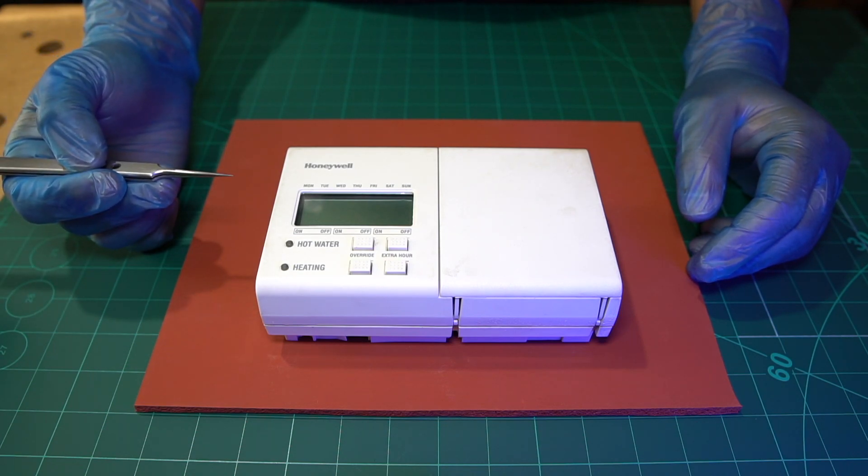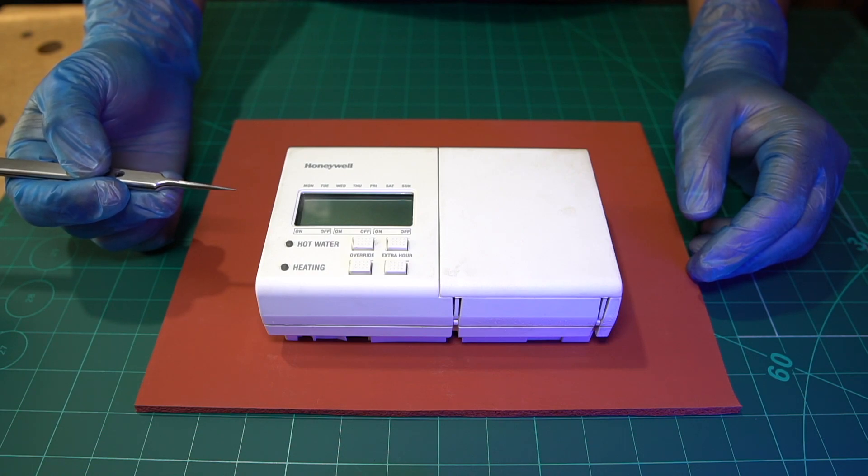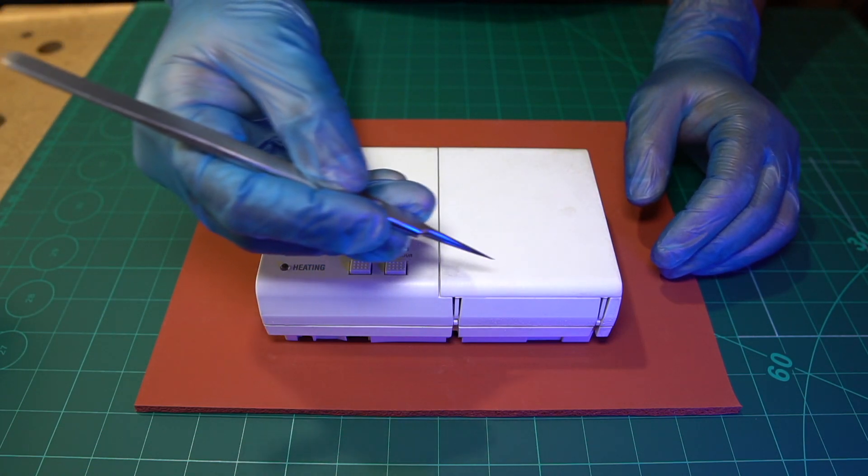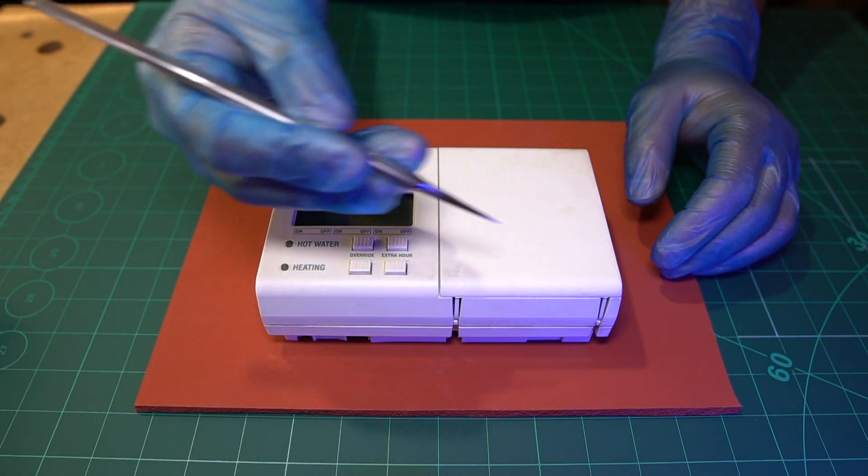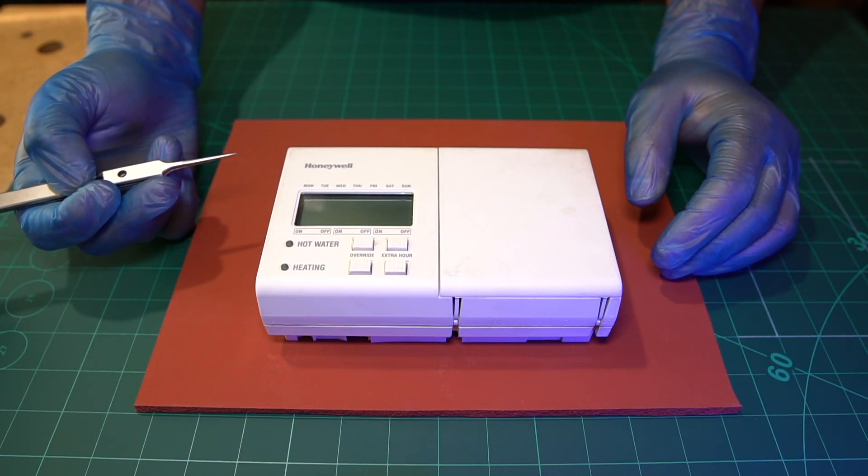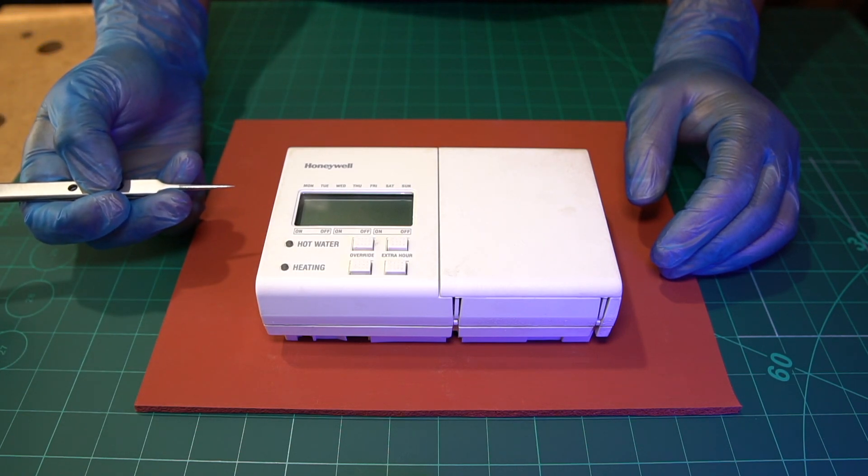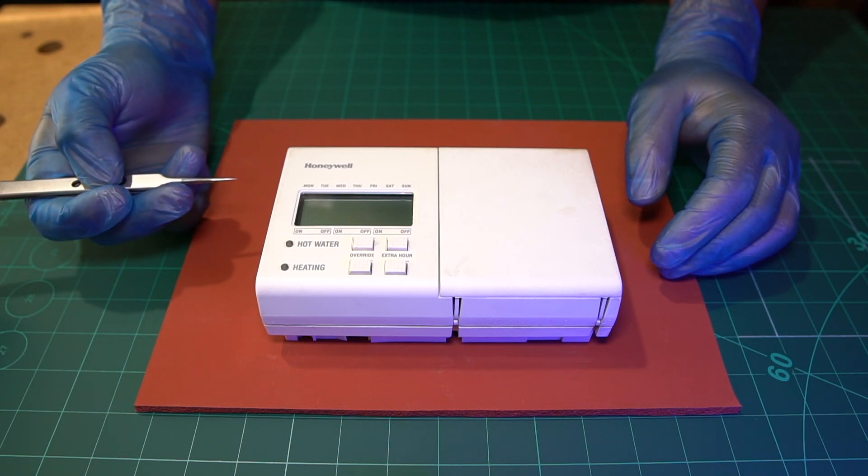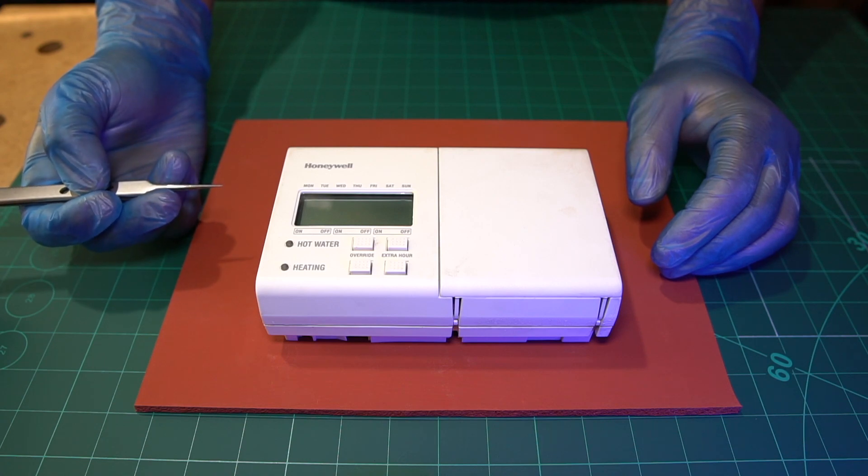You're probably used to the newer type ones where they have a battery in the bottom that you can take out and replace, maybe two AA batteries. But these ones were fitted to houses in the United Kingdom about 15-20 years ago.